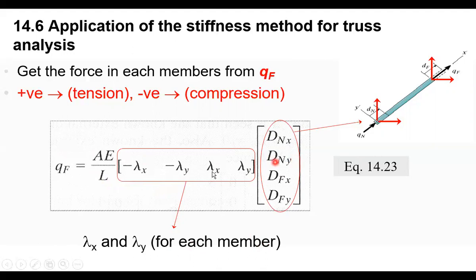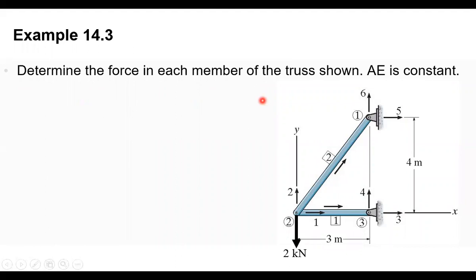That was the theory. Let's apply it by solving example 14.3, which asks us to determine the force in each member of the truss shown, with AE constant. This truss is exactly the same as the one from example 14.1 — but now a load of 2 kilonewtons has been added at node number 2, going downward.